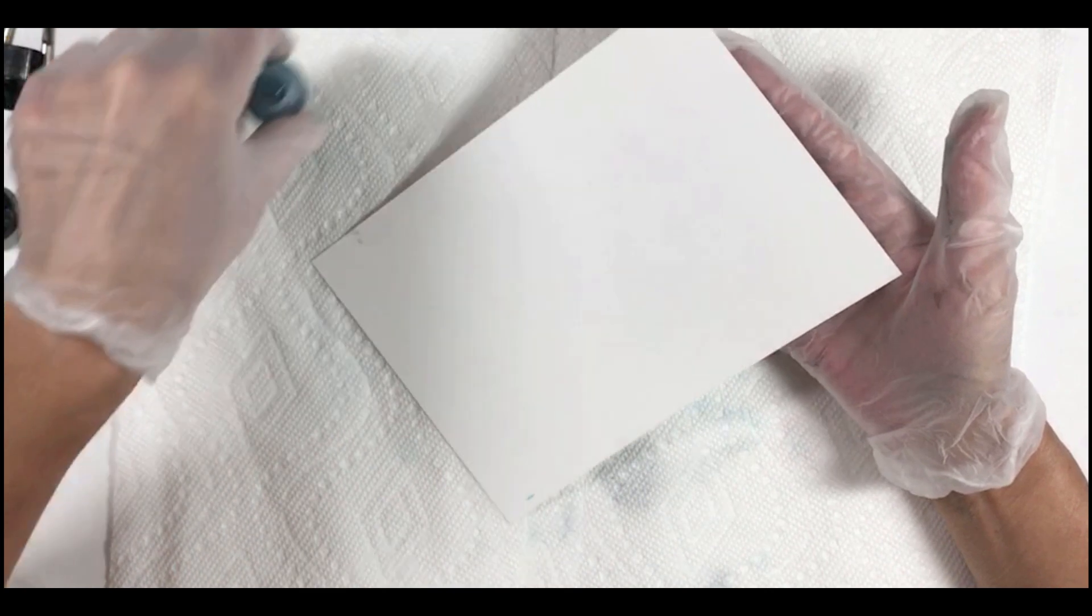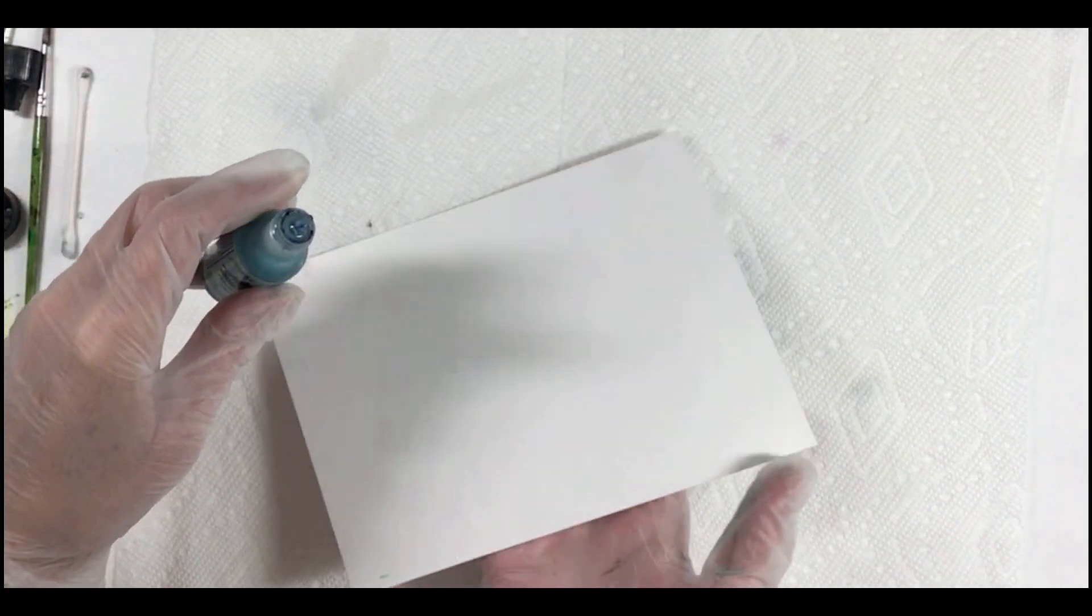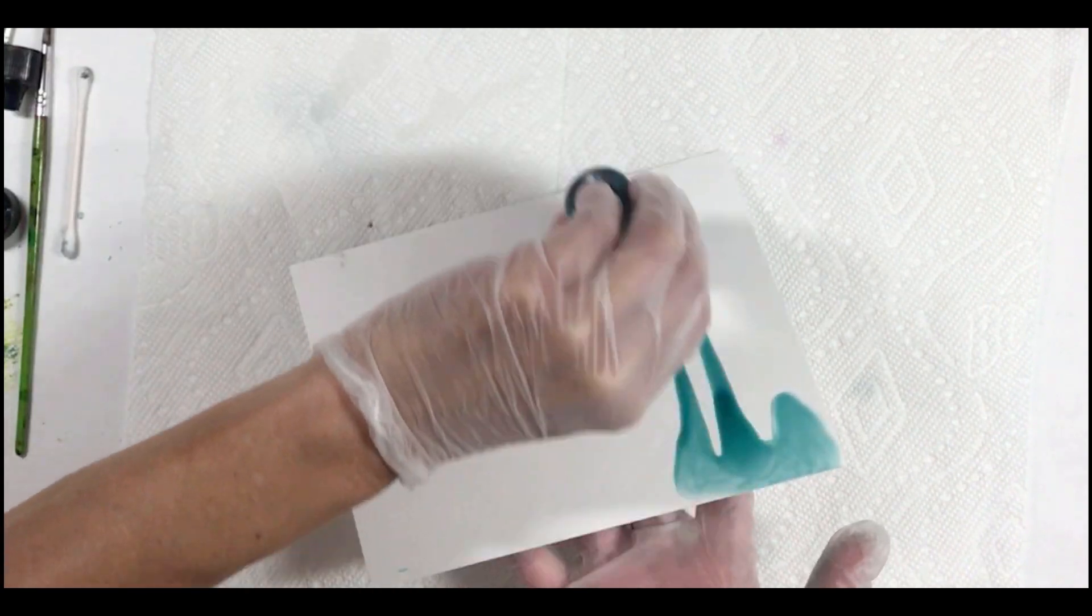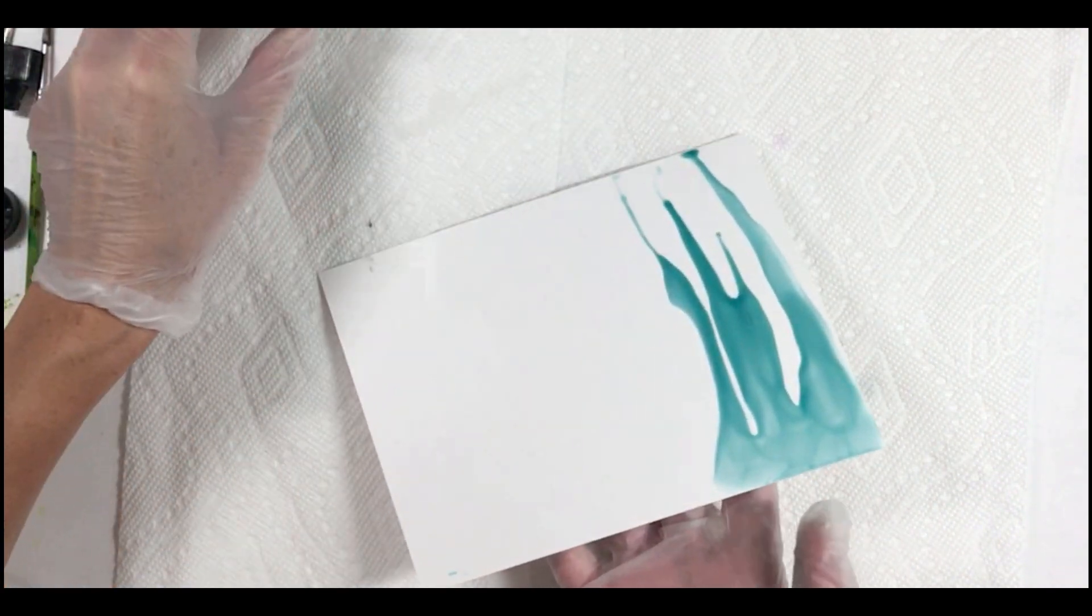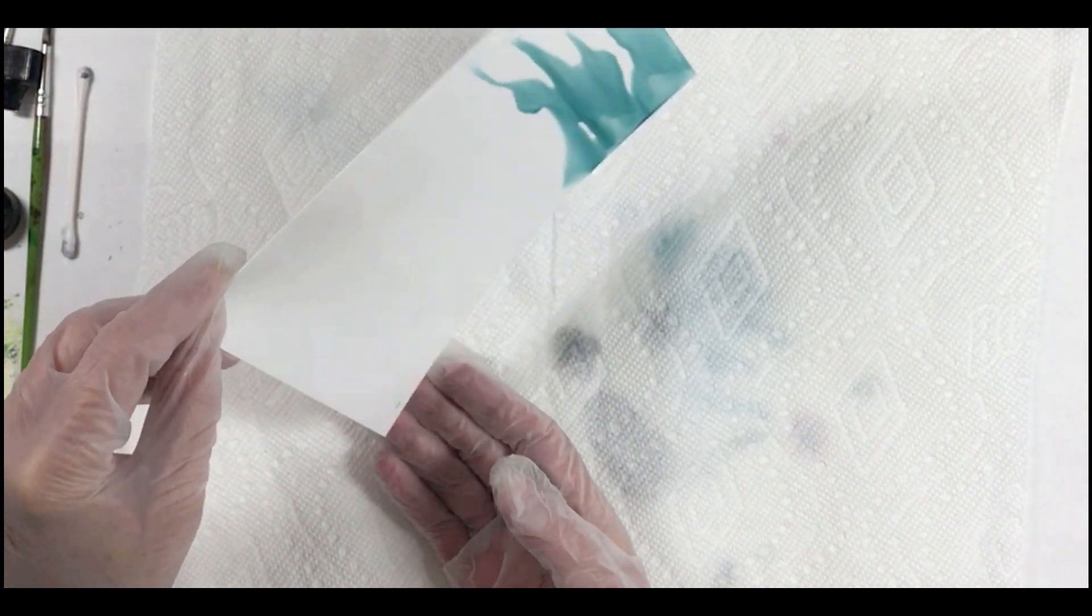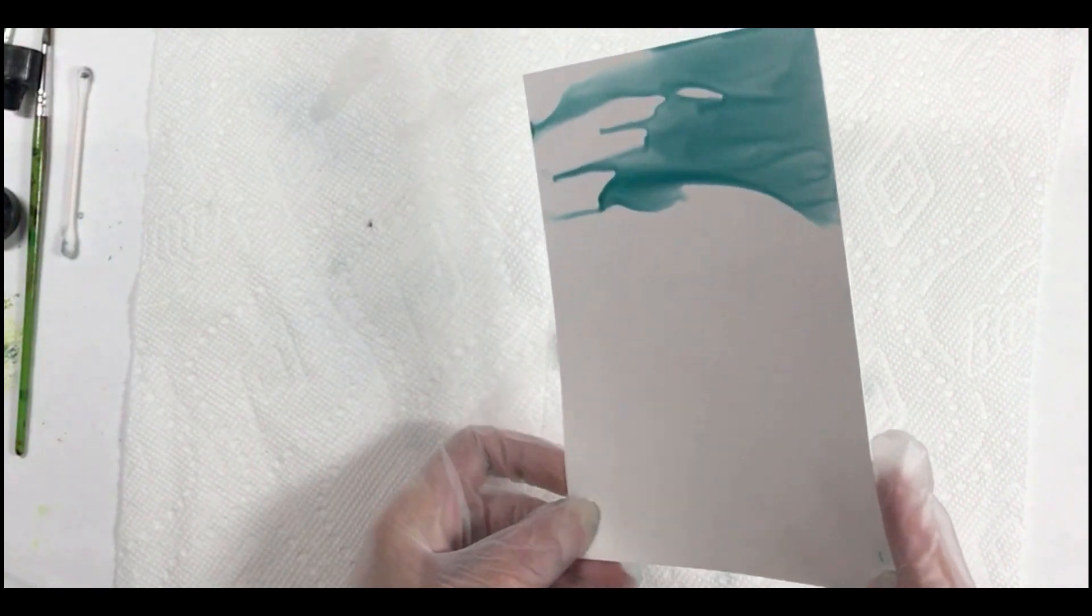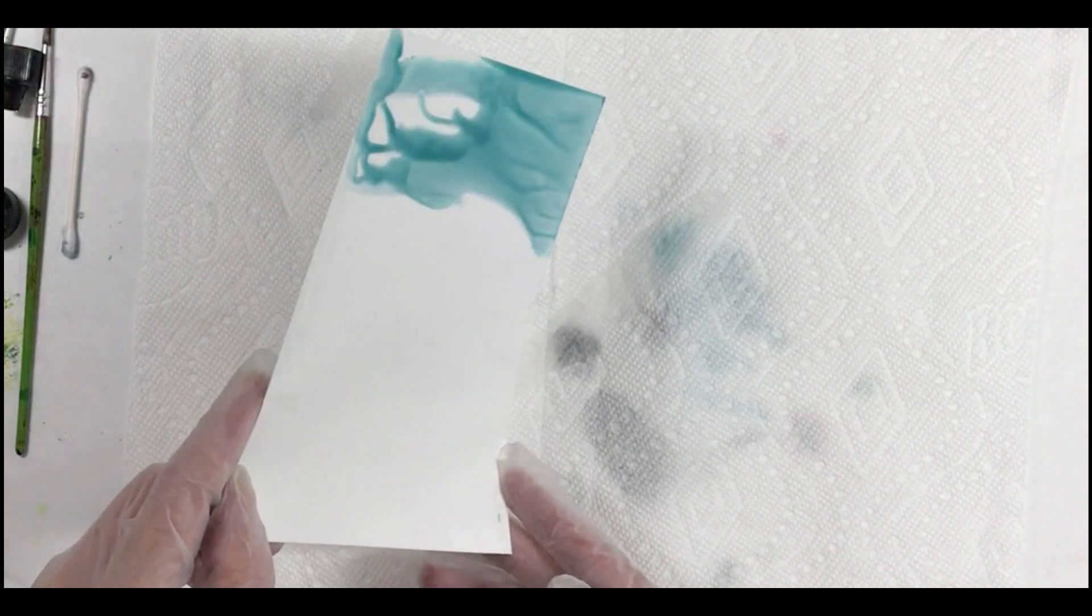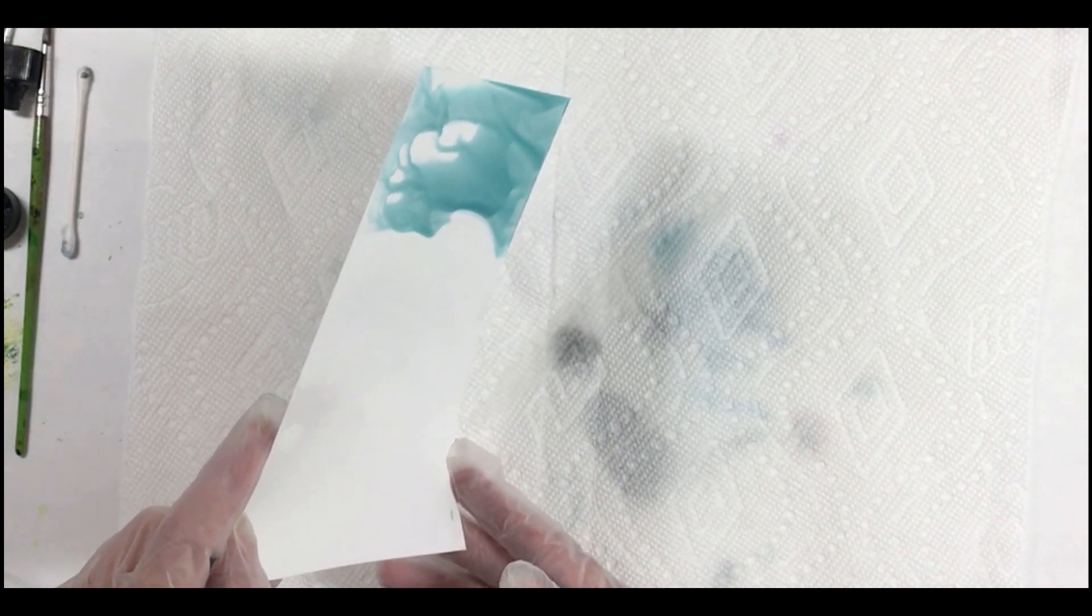Let's hold our paper up so we can let gravity help us in the process and start with our Cloudy Blue ink. I'm going to put a little bit of that along the top of this piece of paper and just turn this paper side to side so that that ink is running across the paper to start to create our sky.